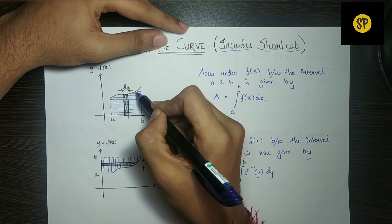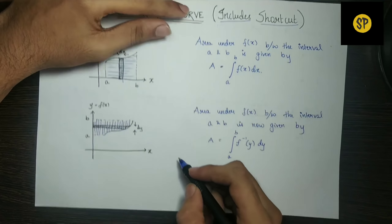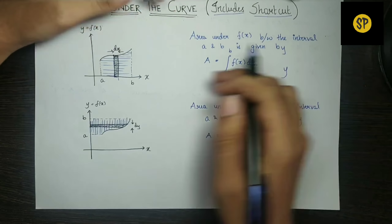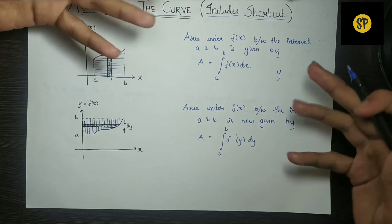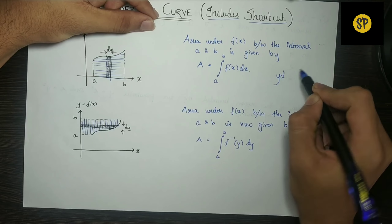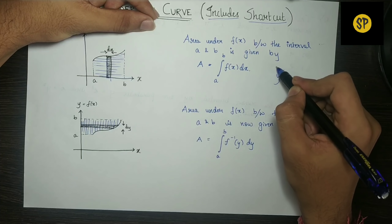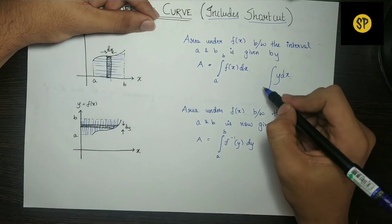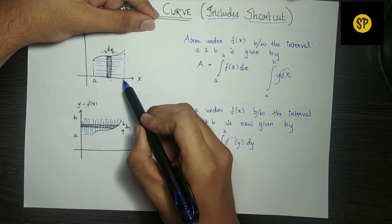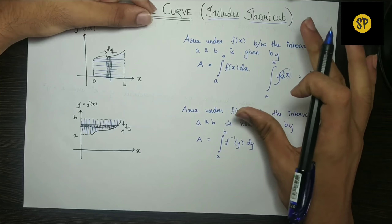At the next point, x changes by a small step — say, 10.001 or 10.002. So from a to b, we consider each step: the length is y, the variable with respect to x, multiplied by the width dx. This is one small rectangle. We need to integrate this from a to b — that gives us the final total area. This is the actual concept.